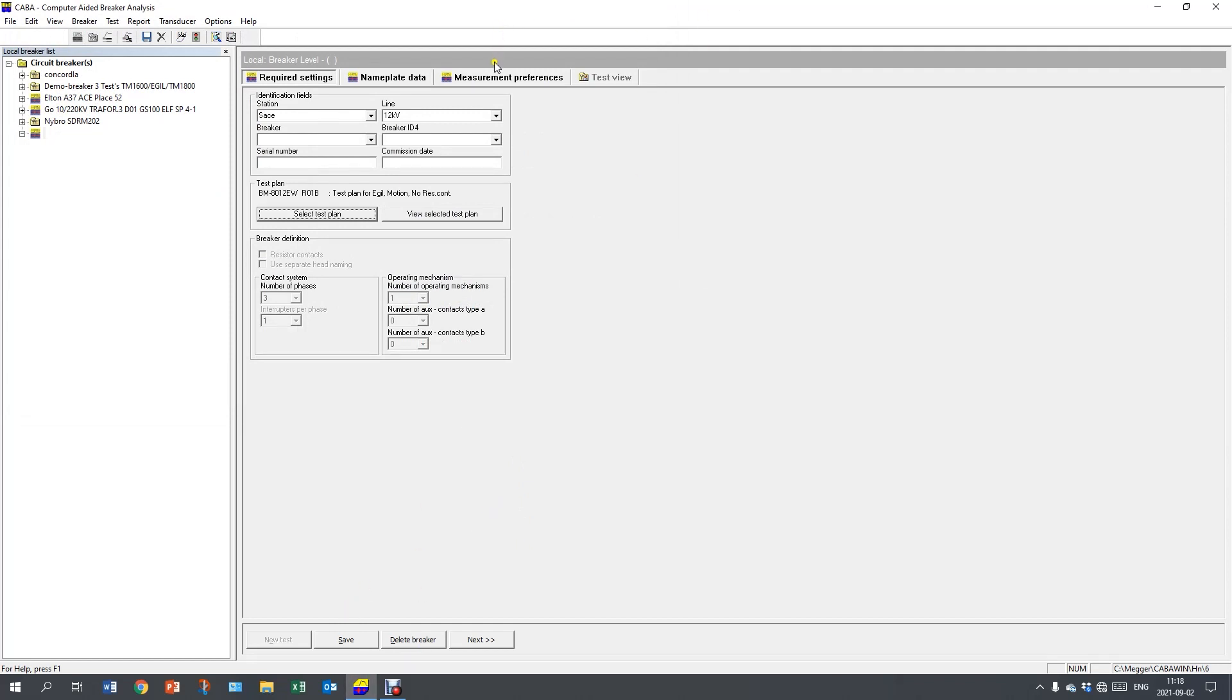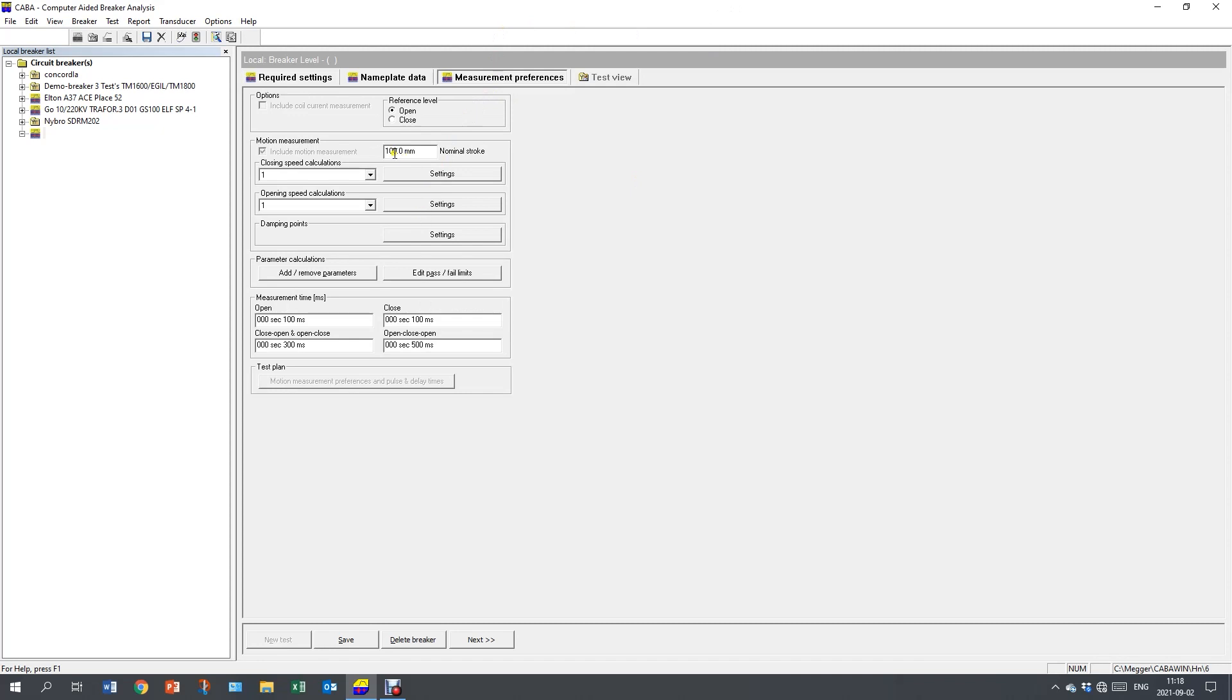I continue with setting the stroke. I use 100 mm because I don't know the stroke of this transducer. So I use a simple value as 100 because it's easier to calculate if I get more information in the future. I extend the measurement time on both close and open operation. I know this breaker is slow and I need enough time to catch the whole motion, not only the timing. I save. And now I have my new object in the list.